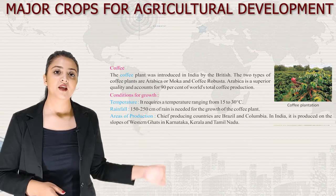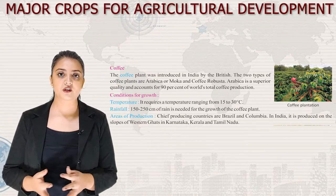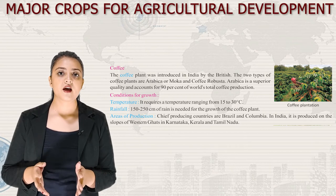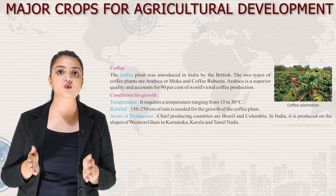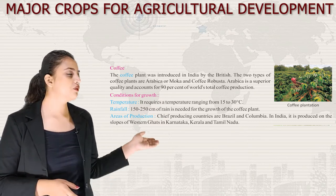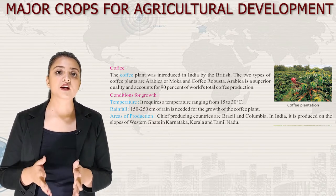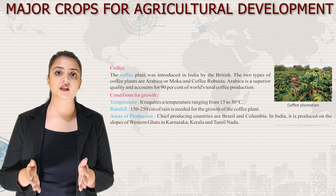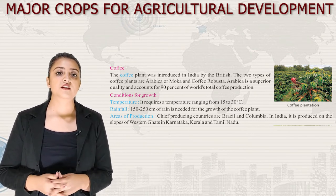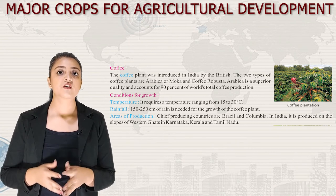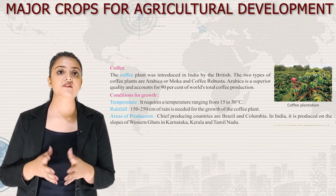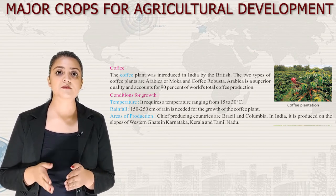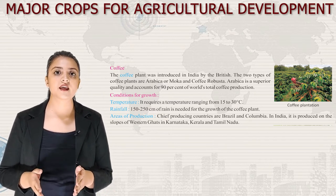Next let's talk about coffee. The coffee plant was introduced in India by the British. The two types are Arabica (or Mocha) and Coffea Robusta. Arabica is superior quality and accounts for 90% of world's total coffee production. Conditions for growth: temperature 15°C to 30°C and rainfall 150 to 250 cm. Chief producing countries are Brazil and Colombia. In India, it is produced on the slopes of the Western Ghats in Karnataka, Kerala and Tamil Nadu.